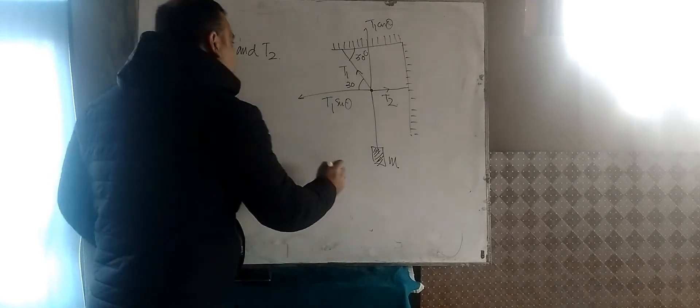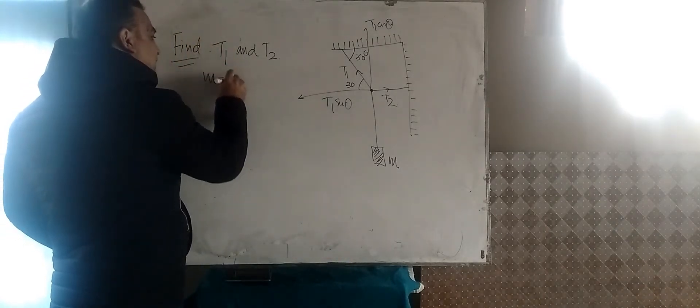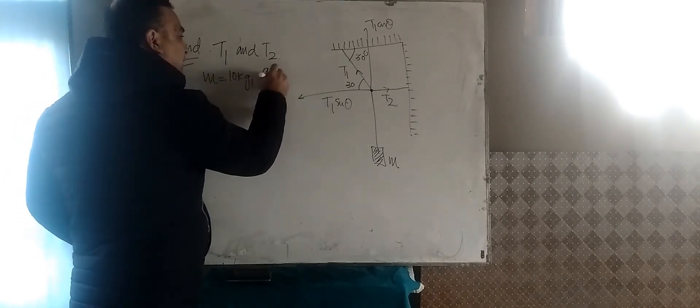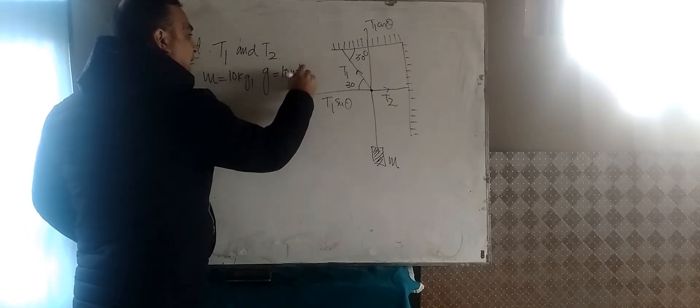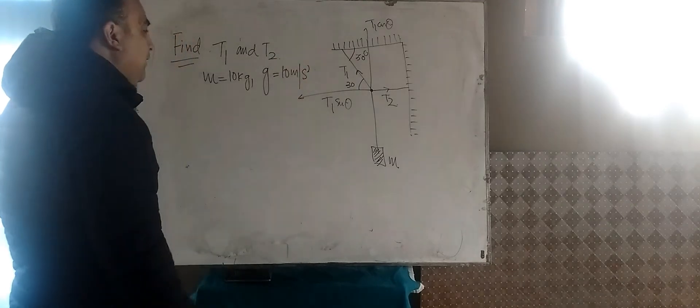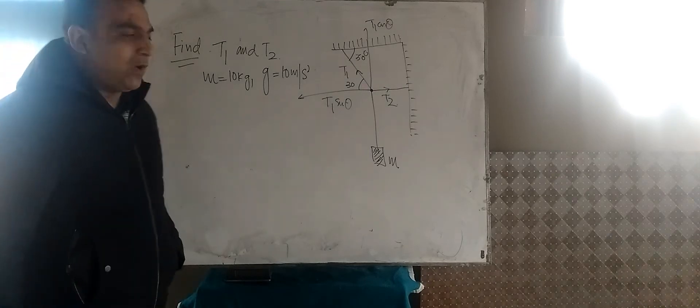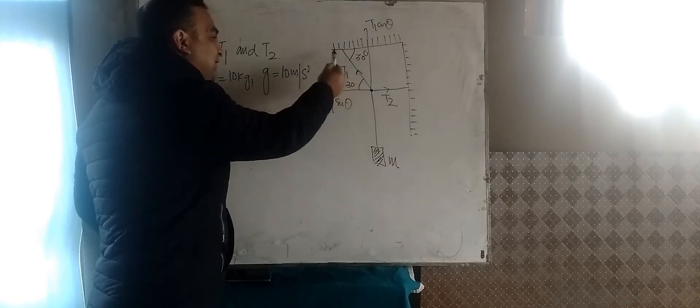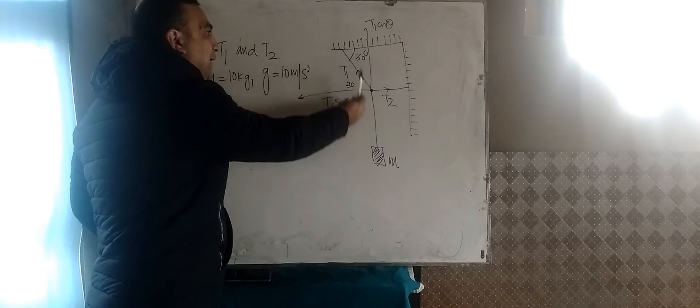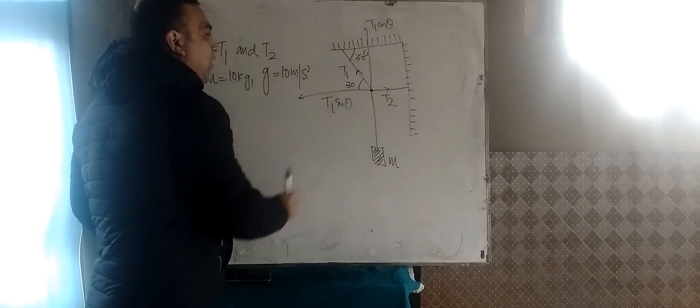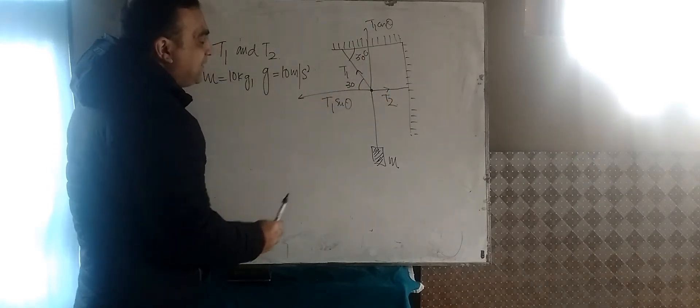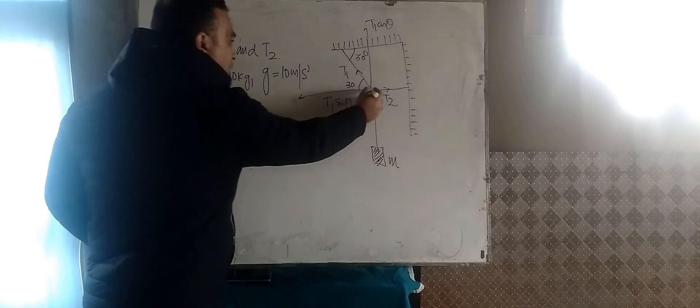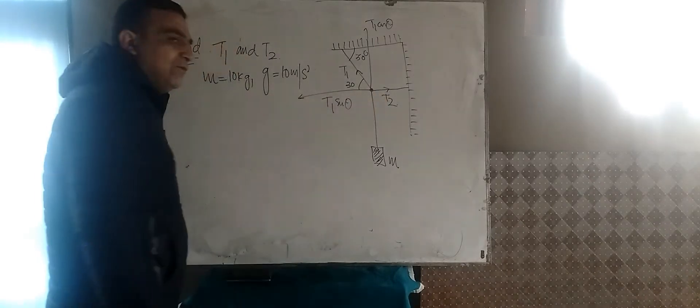Let me assume that in the given problem, the mass of this body is 10 kilograms and acceleration due to gravity is equal to 10 meter per second squared. The things are quite clear in this problem. You have resolved the vector T1 into two components, one is in the vertical direction and another one is in the horizontal direction, and since we are assuming that this system is in equilibrium, the net force acting on this point is equal to zero.